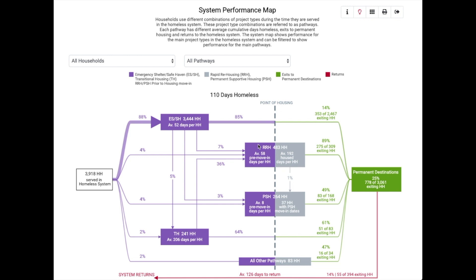The boxes also include data on the average number of days households stayed in that project type. In addition to showing you how long the average household stayed in each individual project type, at the top of the system map diagram you can see the average length of time that households were homeless in your system during the year.